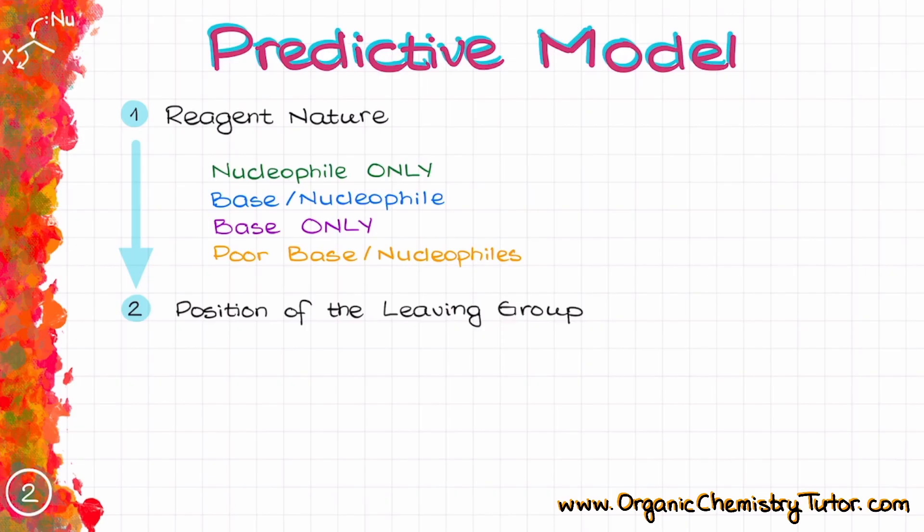Once we categorize our reagents, we'll have to move to the position of our leaving group and see where it is. The leaving group of course can be either primary, secondary, or tertiary. We're also specifically going to point out allylic and benzylic positions because they have their own intricacies and we must keep those in mind as well.